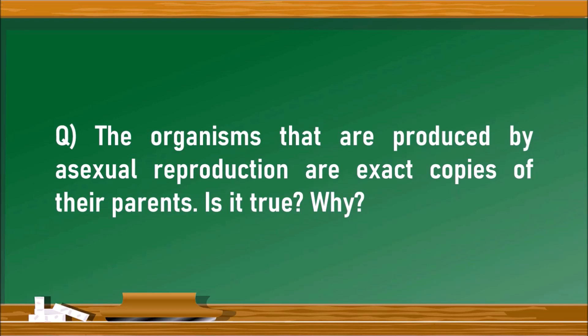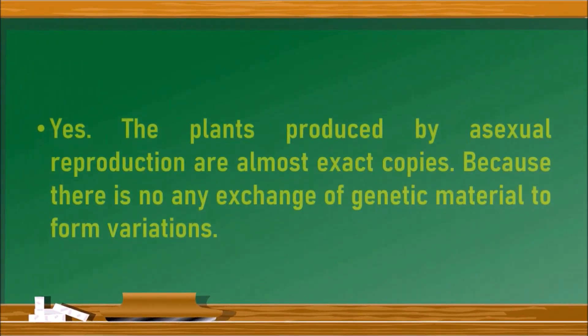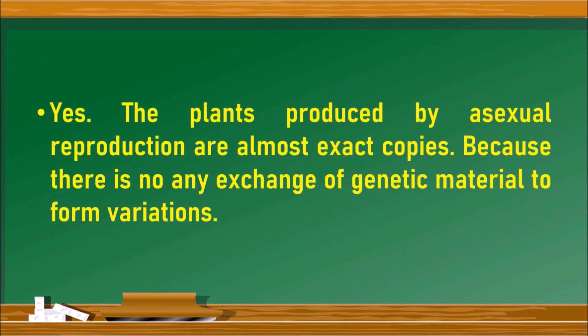The organisms that are produced by asexual reproduction are exact copies of their parents. Is it true and why? Yes, the plants produced by asexual reproduction are almost exact copies. Because in asexual reproduction, there is no exchange of genetic material.